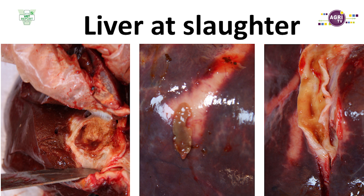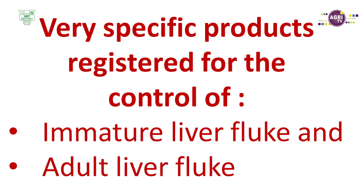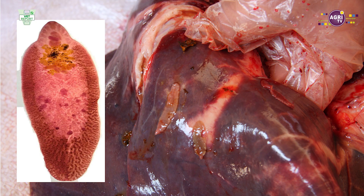You need to talk to your veterinarian about the program for managing liver fluke. We have certain treatments — either tactical treatment when we see new infestations, or a strategic treatment given at the end of winter to get the animals clean of liver fluke so they don't infect the freshwater snails the following year and complete the cycle.